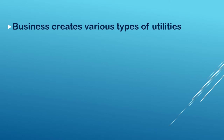Business creates various types of utilities. Utility means something which has a want-satisfying power. For example, if you're hungry and I give you a handful of sand or a brick, it will not satisfy your hunger — I have to give you a slice of bread, pizza, or a bowl of rice. In business, they create want-satisfying power by creating utilities. Let us see the different types.